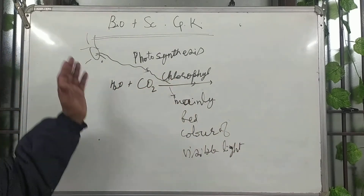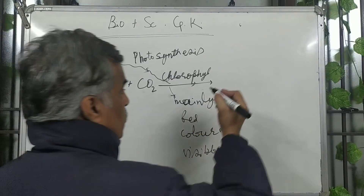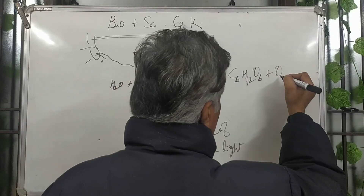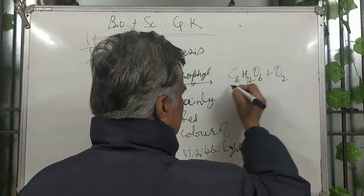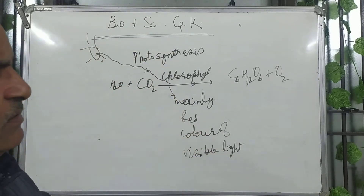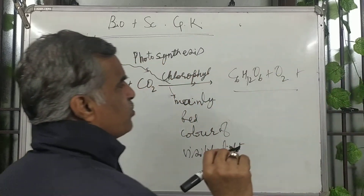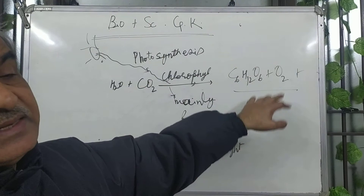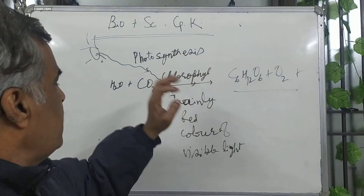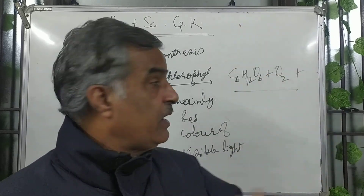Light falls on the leaf and a chemical reaction takes place. By this, glucose (C6H12O6) plus oxygen (O2) — six molecules of oxygen — are produced. Glucose and oxygen will be produced, plus some water molecules also. This is photosynthesis: chlorophyll in leaves, with CO2, water, and sunlight, produces glucose, oxygen, and water.